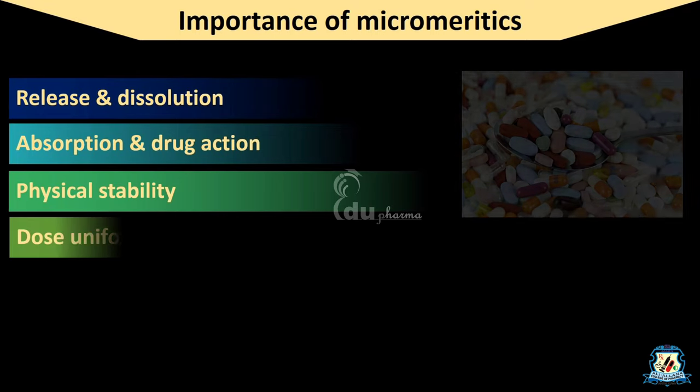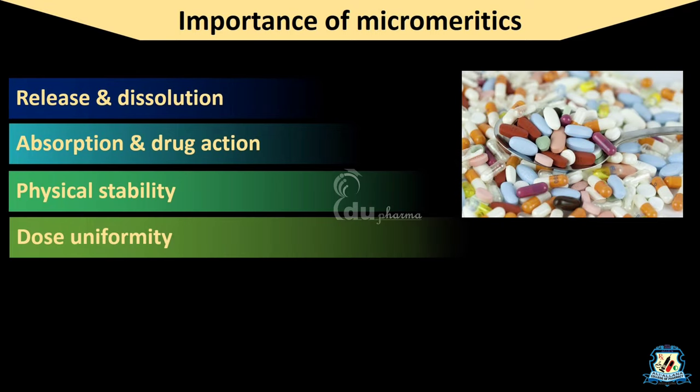The next importance is Dose uniformity, which is a very significant necessity for unit dosage forms. As in the case of tablets and capsules, good flow properties of granules and powders are important in manufacturing. To achieve dose uniformity in such formulations, the distribution of particles should be uniform in terms of number as well as weight.